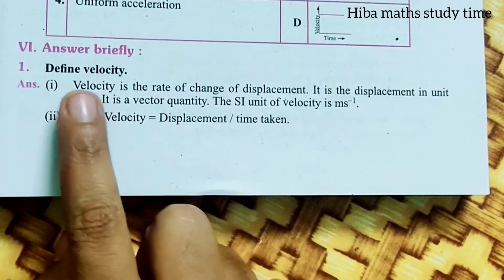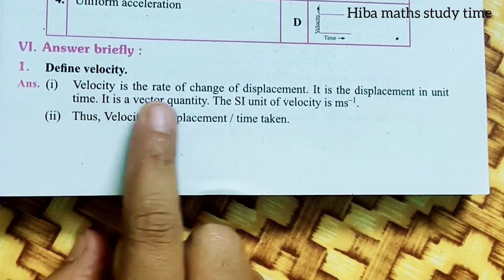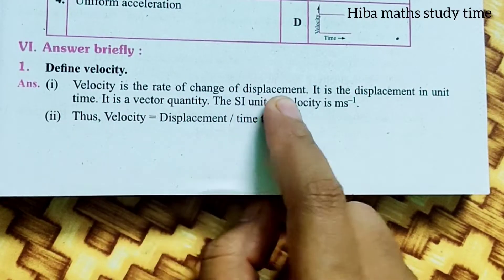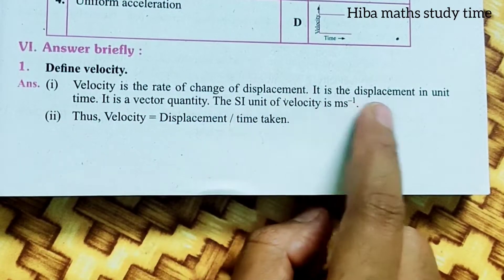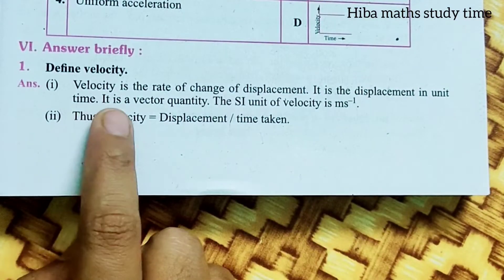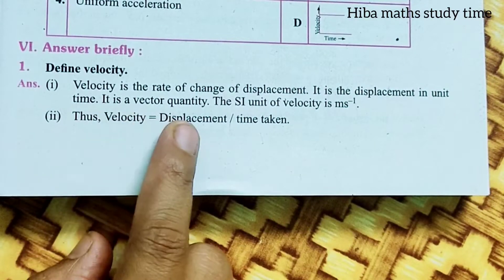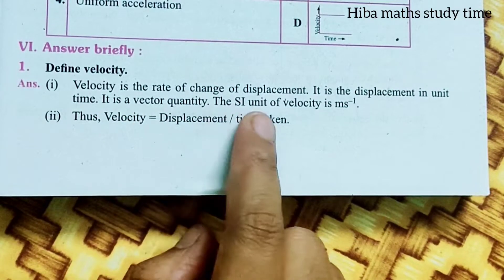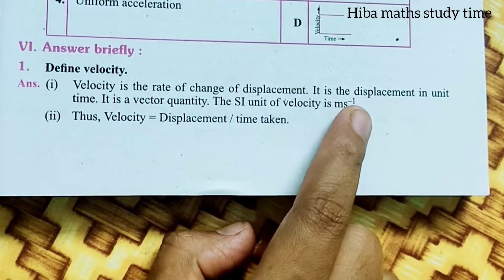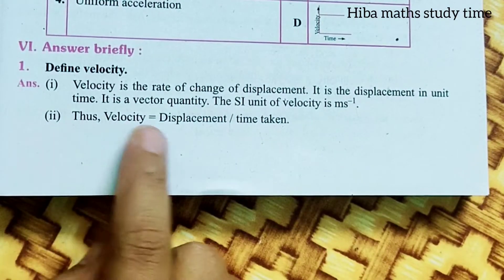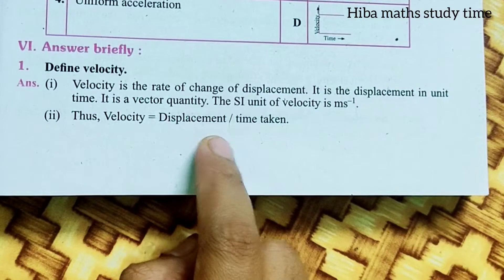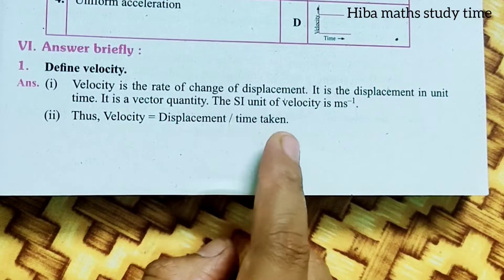Define velocity. Velocity is the rate of change of displacement. It is the displacement in unit time. It is a vector quantity. The SI unit of velocity is meter per second. Thus, velocity is equal to displacement divided by time taken.